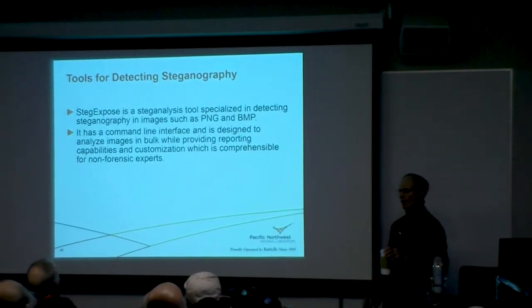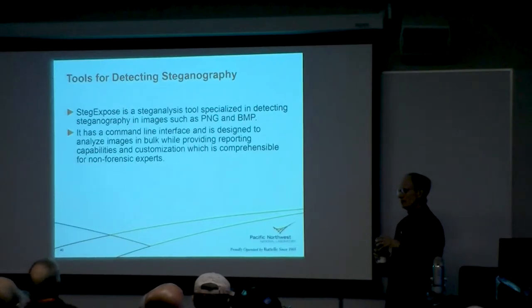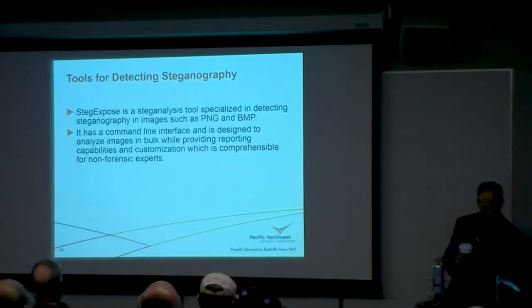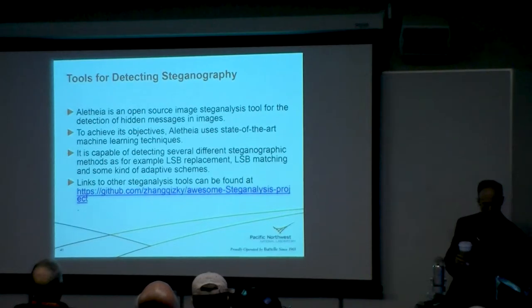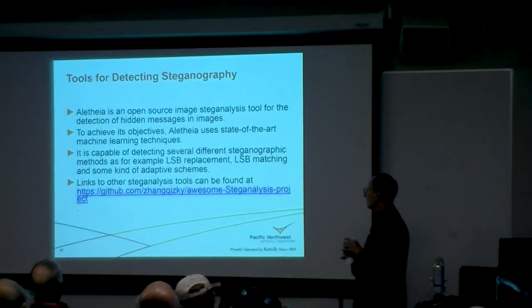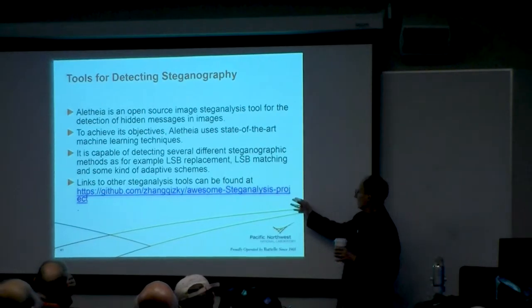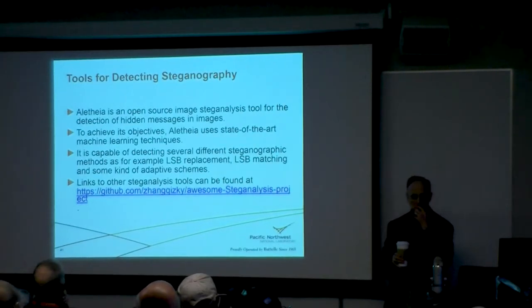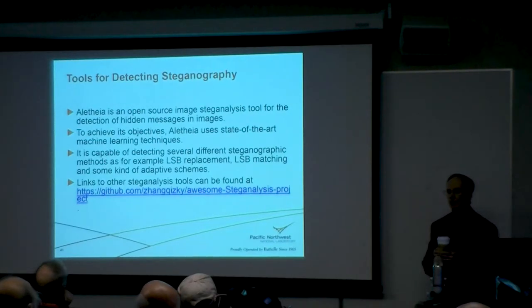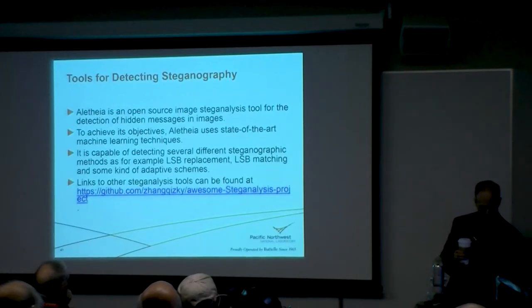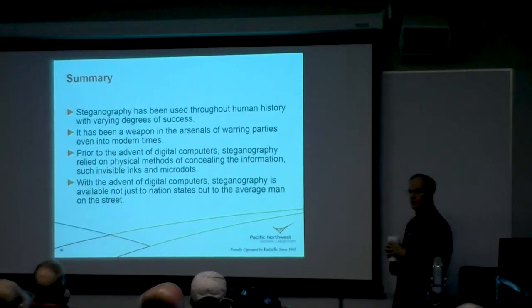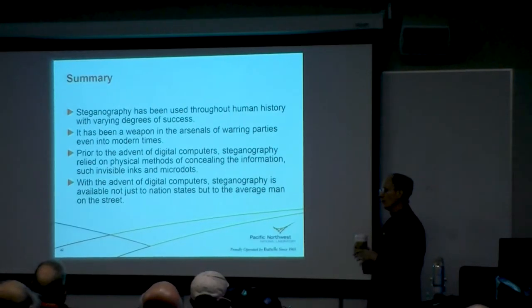Another way for detecting steganography: steg-exposed, which works on portable network graphics and bitmap files. It will do a whole directory at a time and gives you a statistical probability that steganography is used in a file. A new open-source tool for steganalysis called Aletheia has recently come out — I haven't had a chance to play with it yet. There's a nice link on GitHub for all sorts of steganographic tools for doing steganalysis.